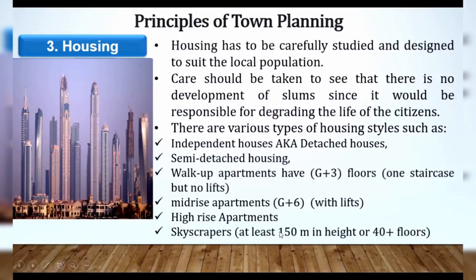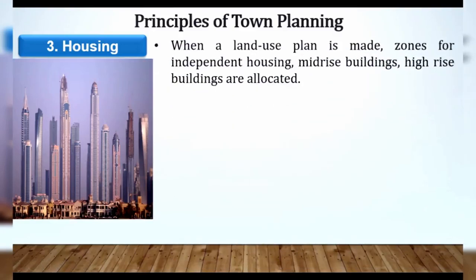When a land use plan is made, zones for independent housing, mid-rise buildings, and high-rise buildings are allotted. As I told you, residential zone is our own zone. If we want to do sub-zones, then how do we divide? Independent detached houses — separate zone. Semi-detached houses — separate zone. Mid-rise buildings — a sub-category or particular zone. High-rise buildings — separate zone.